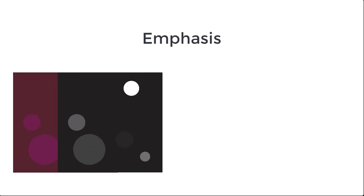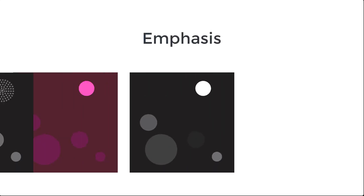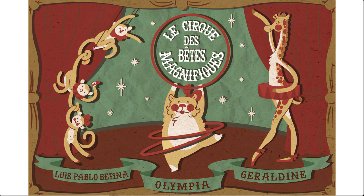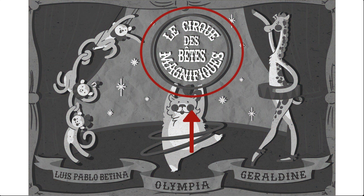Emphasis creates a focal point. Areas that are light in value, brightly colored, or highly detailed draw the viewer's eye more than areas that are dark, dull, or less complex. In this piece, the focal point becomes the title within the center hoop. The text is centered, elevated, it is the lightest value present, and it's the most detailed element within the composition.